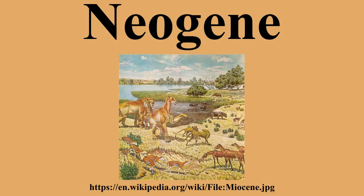The terms Neogene system and upper Tertiary system describe the rocks deposited during the Neogene period. The continents in the Neogene were very close to their current positions. The Isthmus of Panama formed, connecting North and South America. India continued to collide with Asia, forming the Himalayas. Sea levels fell, exposing land bridges between Africa and Eurasia and between Eurasia and North America.